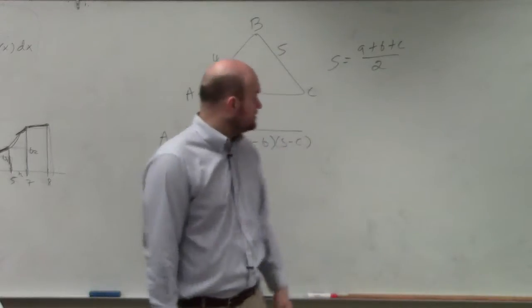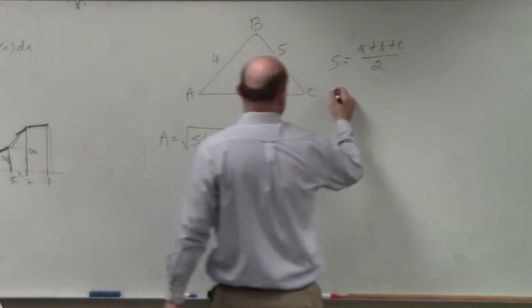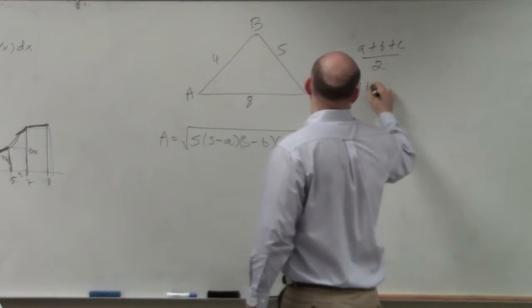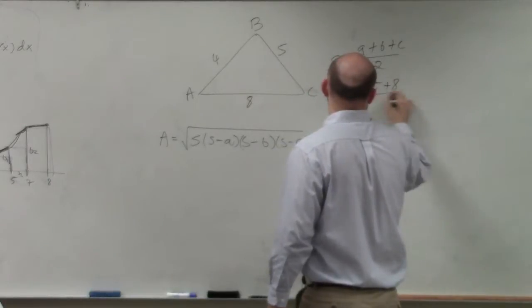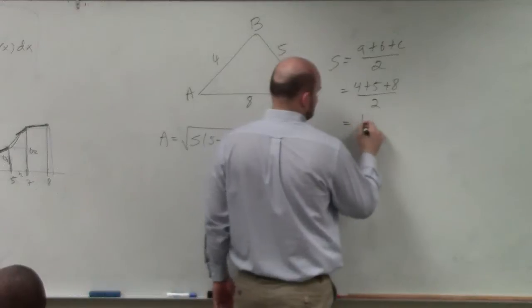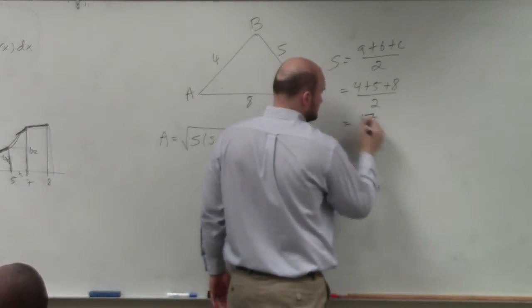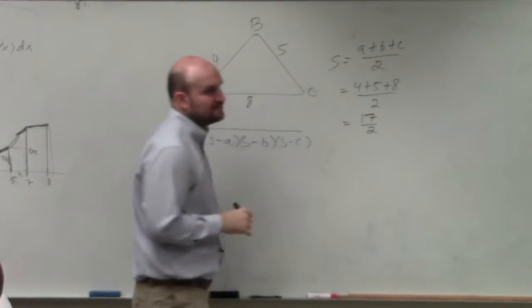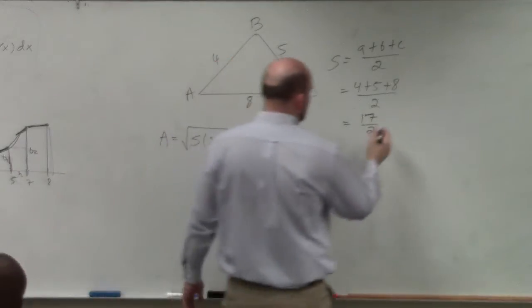So in this case, we can just do 4 plus 5 plus 8 divided by 2. And you can see that's not going to be a nice number, is it? 17 halves, which is equivalent to 8.5.